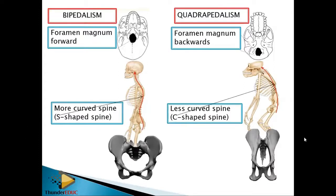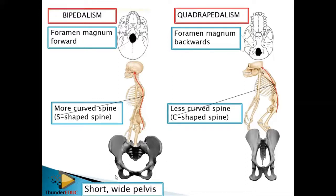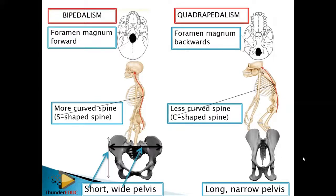For bipedalism, the pelvis is short and wider — short individuals are broad and wider. For quadrupedalism, the pelvis is long and narrow. If you look at a diagram without labels, you identify short and wide for bipedalism and long and narrow for quadrupedalism. An exam question may show you skulls or skeletons without labels and ask which supports bipedalism and which supports quadrupedalism, requiring you to give a reason.